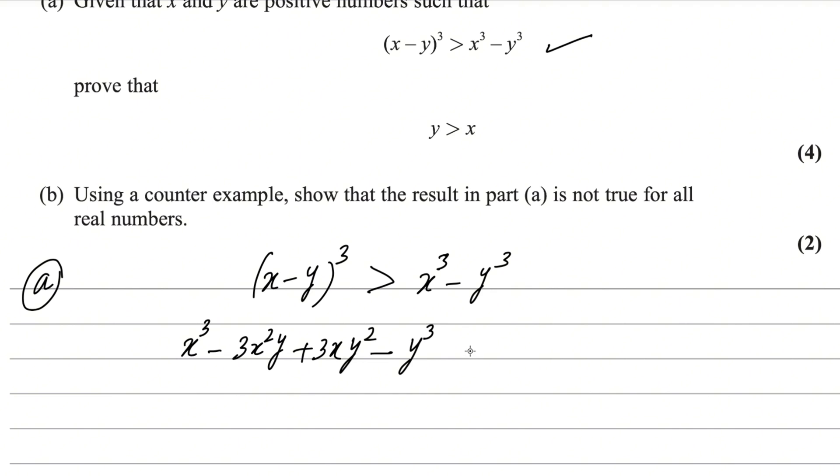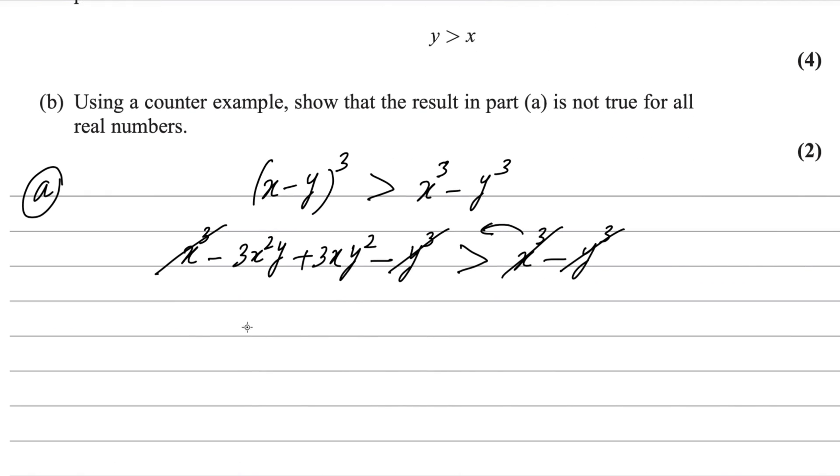So we have x³ - 3x²y + 3xy² - y³ greater than x³ - y³. For sure, this x³ will cancel with the other side. If you move x³ - y³ to the left side, it becomes -x³ + y³. Both x³ and y³ cancel out.